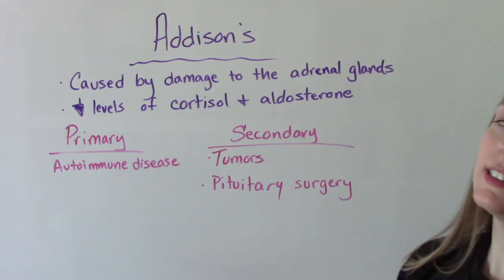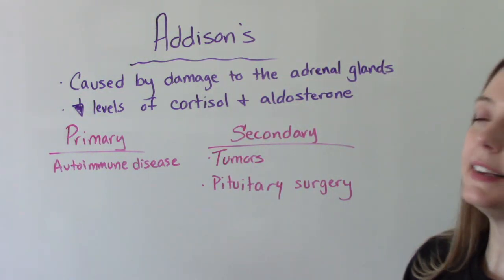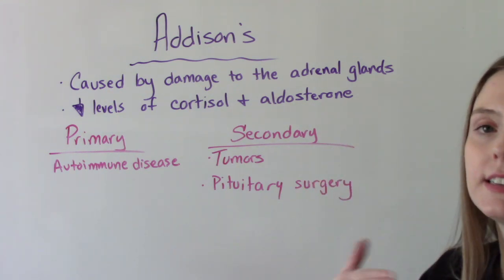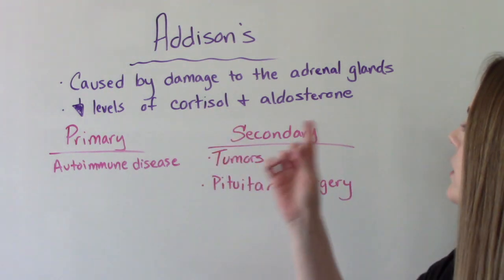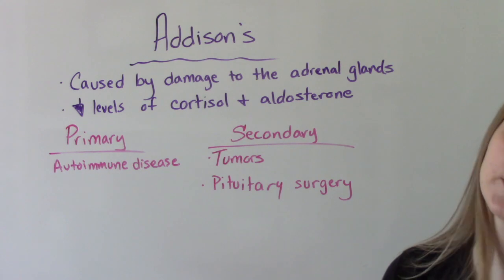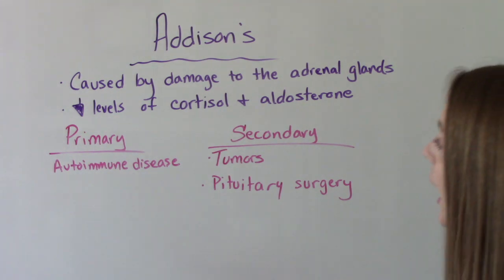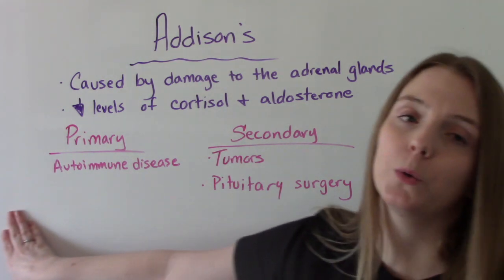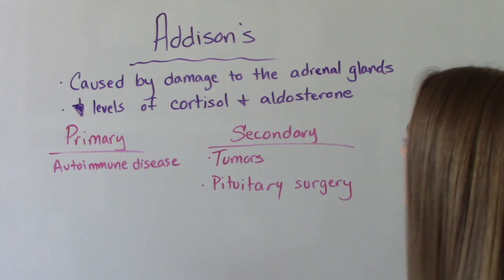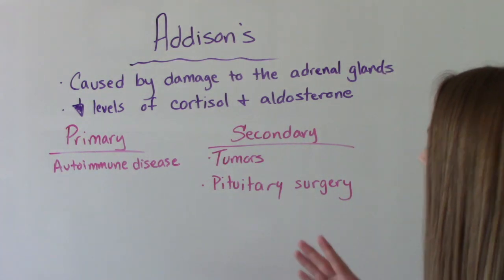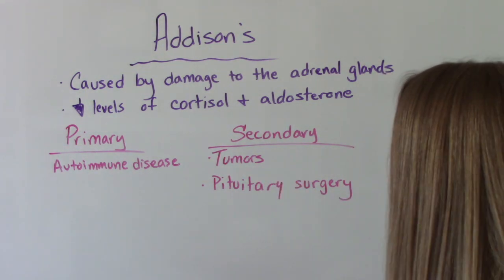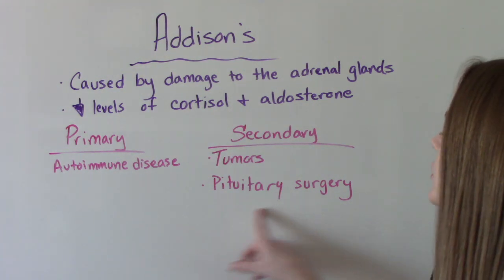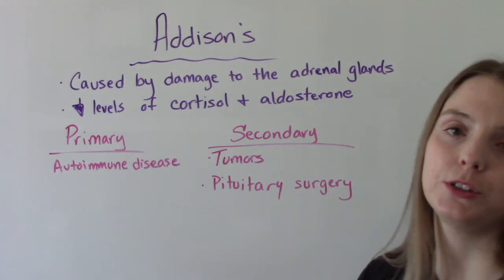Addison's disease is caused by damage to the adrenal glands, resulting in decreased production of cortisol and aldosterone. Primary Addison's is usually caused by an autoimmune disease, while secondary causes can include tumors on the pituitary gland and recent surgery on the pituitary gland.